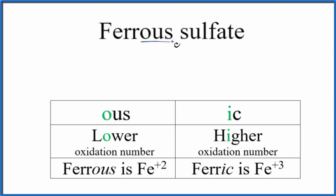When we see ferrous sulfate, we have the older system. The 'ous' suffix tells us we're going to use the lower oxidation number, the charge for this iron. Iron can be +2 or it can be +3, but since we have 'ous' it's gonna be the lower one, Fe +2.